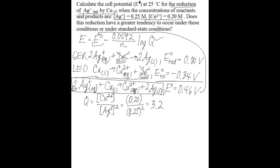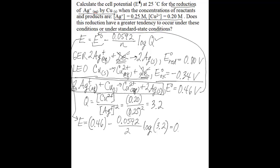Now you can substitute everything into the Nernst equation. E equals 0.46 volts minus 0.0592 divided by 2, multiplied by the log of 3.2. When you do the math, you get an E value of 0.45 volts. That is what you were asked to solve for.